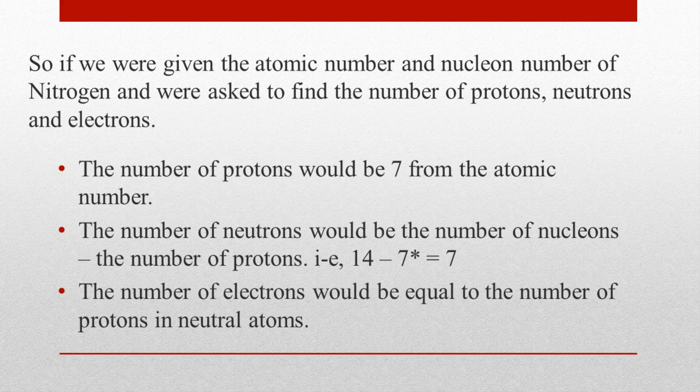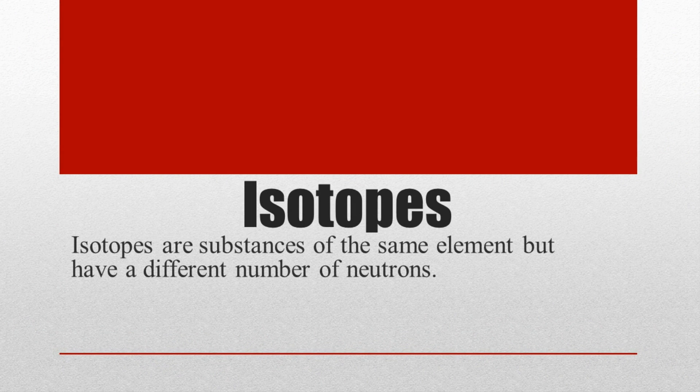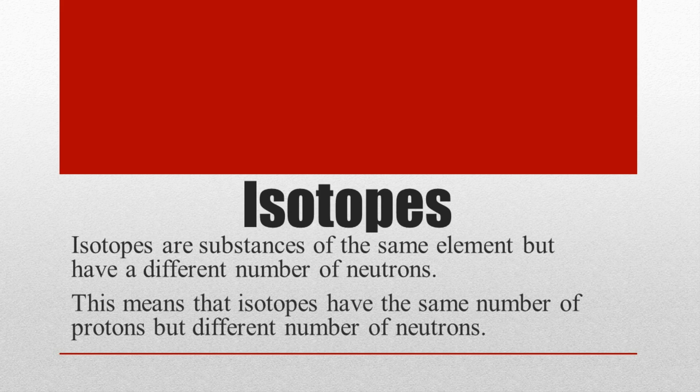And finally, isotopes. Isotopes are substances of the same element but have a different number of neutrons. This means that isotopes have the same number of protons but different numbers of neutrons.